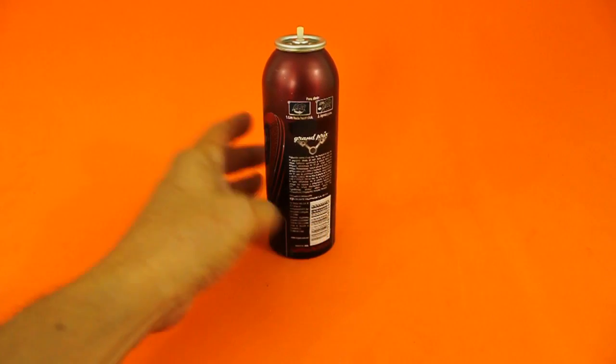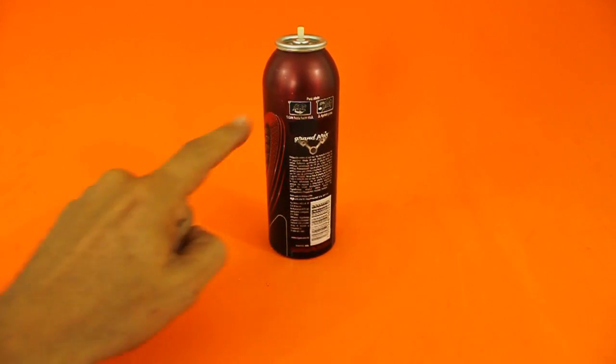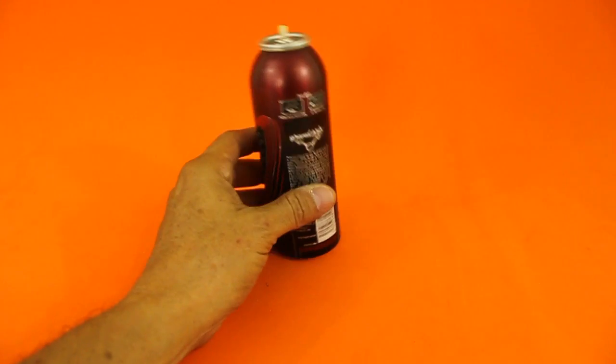The first thing we need to do is remove the paint because we need the can to conduct electricity and the paint is non-conductive. You can use sandpaper to remove the paint.